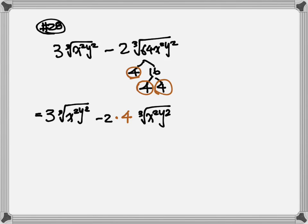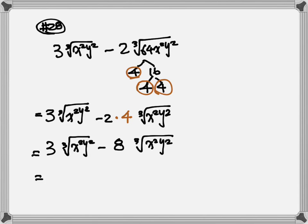For x² and y², both are only squared — that's not enough for a cube root — so they stay inside. Don't forget the little 3 index. So we have 3 times the cube root of 3x²y² minus 2 times 4 times the cube root of x²y², which is minus 8 cube root of x²y². Now subtract the number outside: 3 minus 8 equals negative 5, keep the number inside x²y², and don't forget the little 3 index.